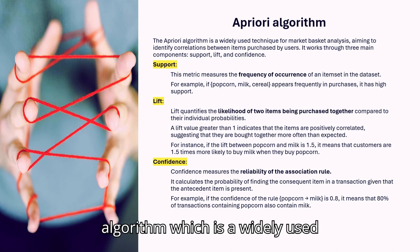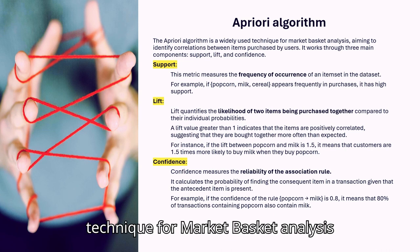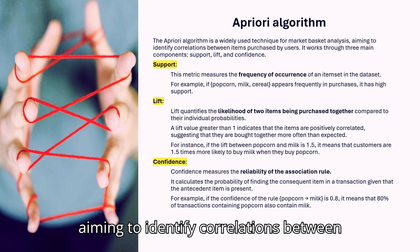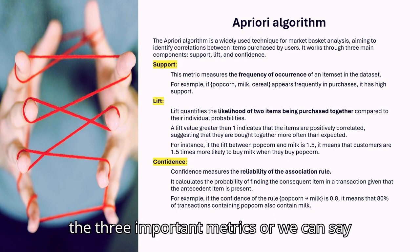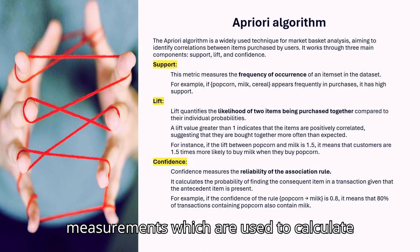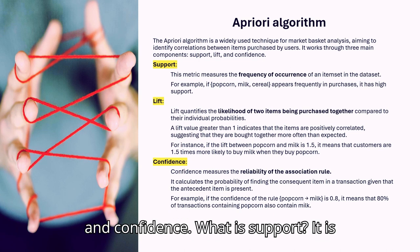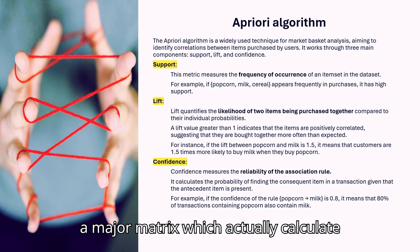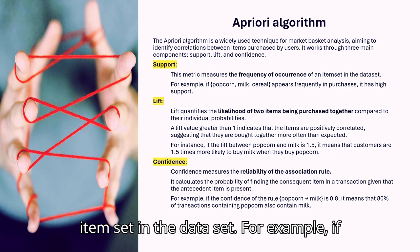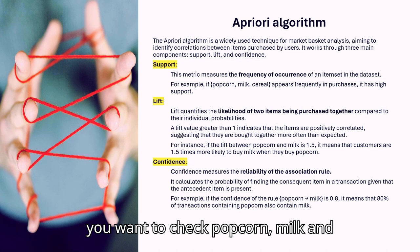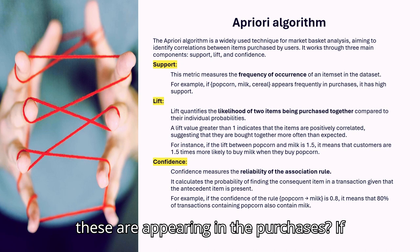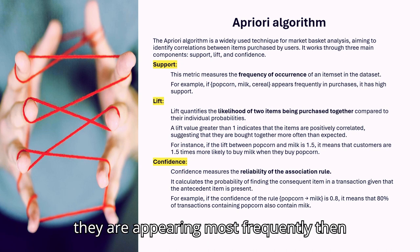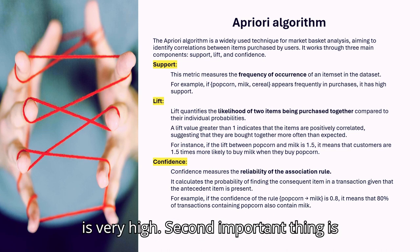Apriori algorithm, which is a widely used technique for market basket analysis, aims to identify correlations between items which are purchased by the user. The three important metrics or measurements which are used are support, lift, and confidence. What is support? It is a major metric which calculates the frequency of occurrences of the item set in the dataset. For example, if you want to check popcorn, milk, and cereal, how frequently these are appearing in the purchases. If they are appearing most frequently, then you will find that the support is very high.